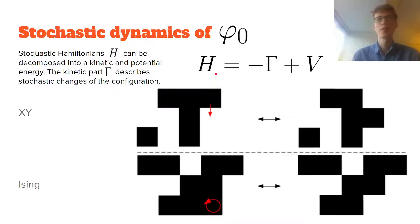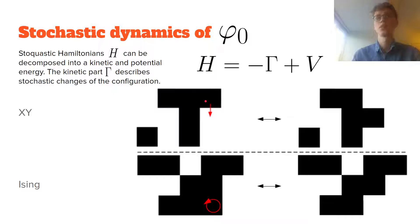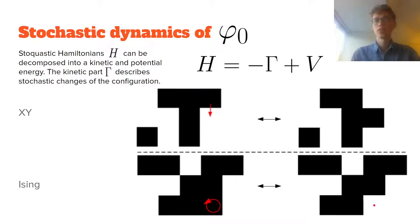Starting with the dynamics of the ground state: this applies to so-called stoquastic Hamiltonians, which can be decomposed into a kinetic part and a potential energy part. The kinetic part, gamma, determines what kind of moves you can make. In the XY model, a move is moving a spin up particle to an adjacent spin down position. In the Ising model, a move is flipping a spin from spin up to spin down. These moves are inherent to the Hamiltonian you're studying.